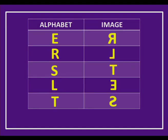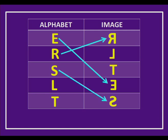Let us do a small activity to identify the mirror images of these alphabets. Here are the alphabets and their respective images — let us match them. First is E, then R, then S, then L, and finally T. Each alphabet is matched to its correct mirror image.